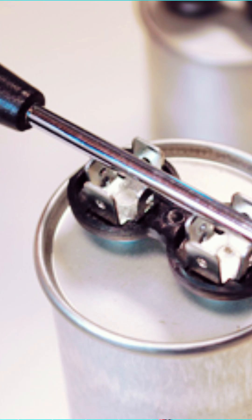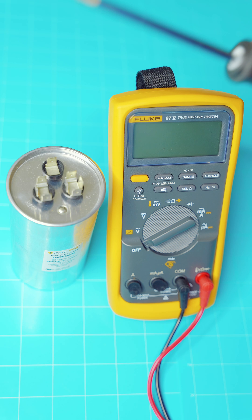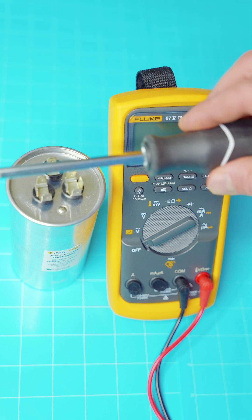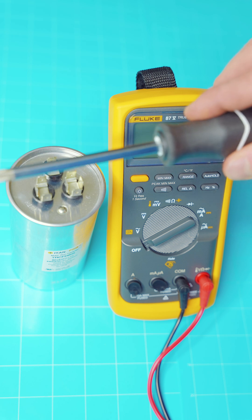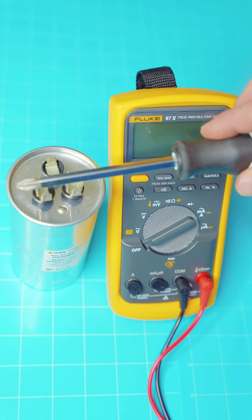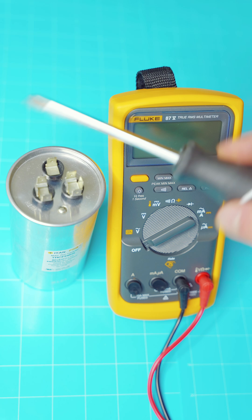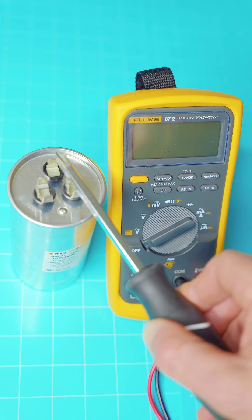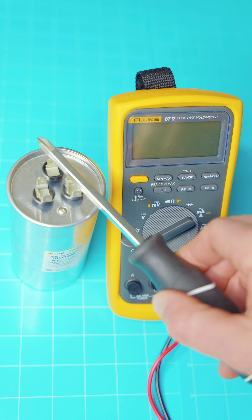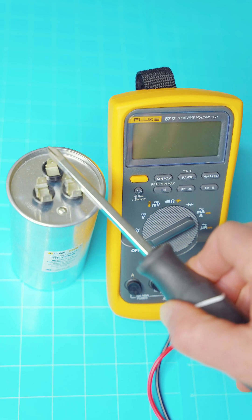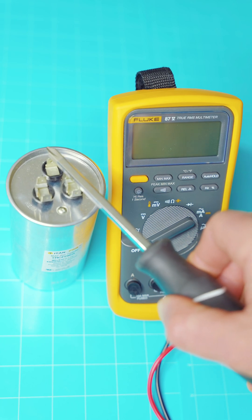Be sure to discharge your capacitor to make sure it's safe to test. To do that, you're simply going to take the metal part of your screwdriver or other tool. Make sure you're touching the insulated part of the driver though, so you don't shock yourself. Just come across the contacts, any contacts that it has. Yours may have two or three. Just make sure you come across them. Any kind of electricity that's in there now will be discharged safely.